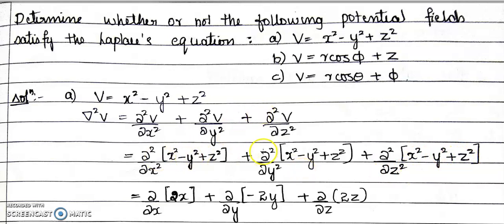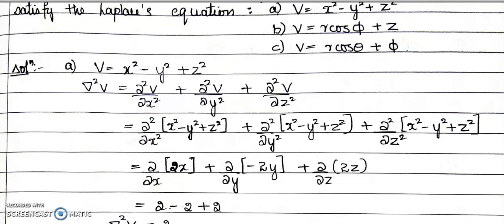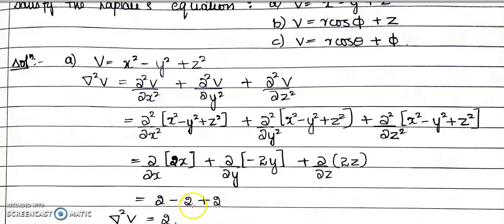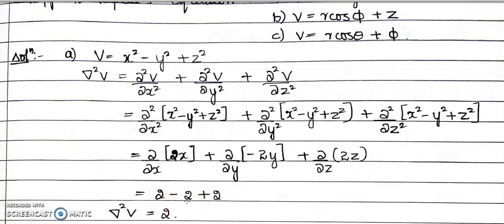Taking the first partial differentiation: ∂/∂x gives 2x (y and z are constant), ∂/∂y gives −2y, and ∂/∂z gives +2z. Since it is a second-order differential equation, we differentiate again: ∂/∂x of 2x = 2, ∂/∂y of −2y = −2, and ∂/∂z of 2z = +2. Taking the sum gives del²V = 2.